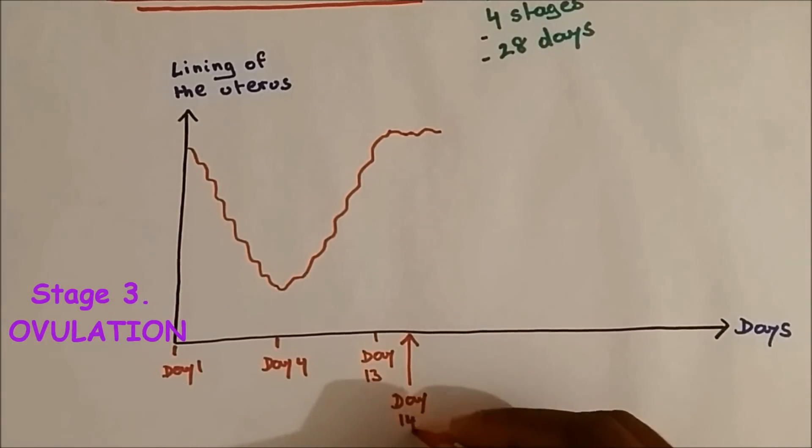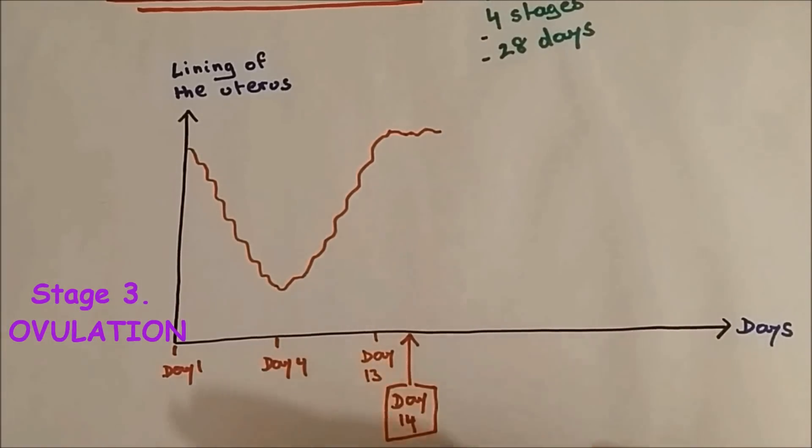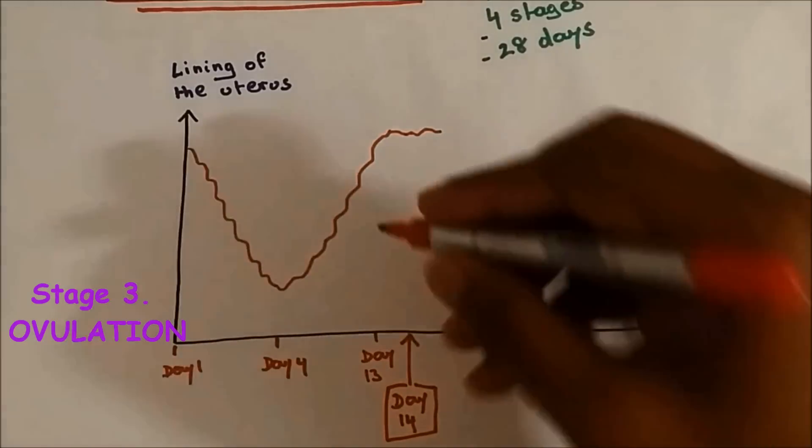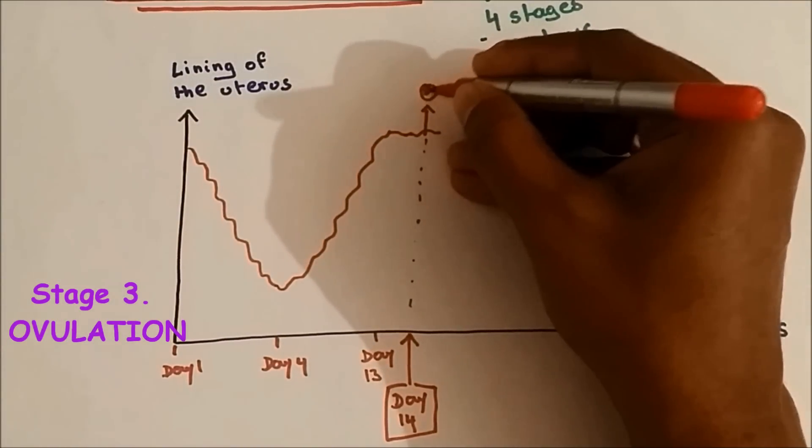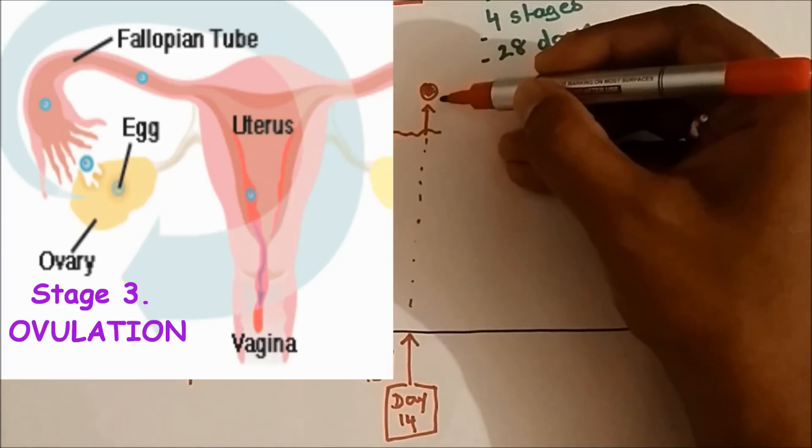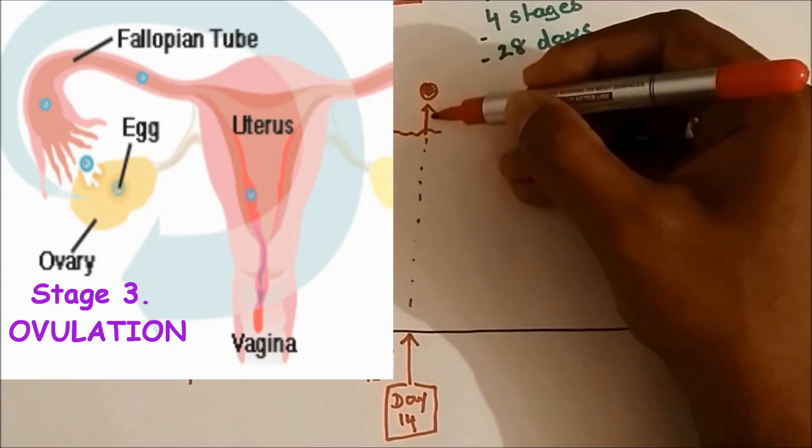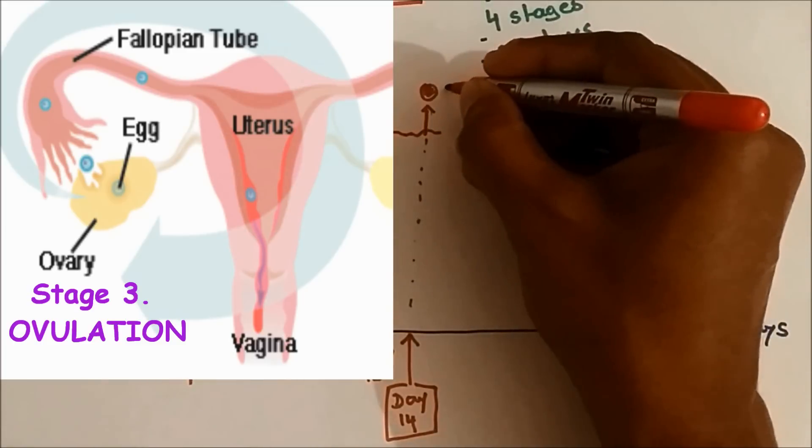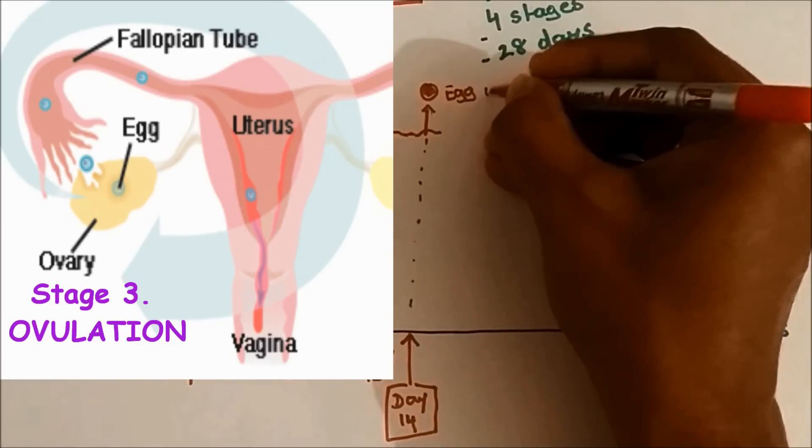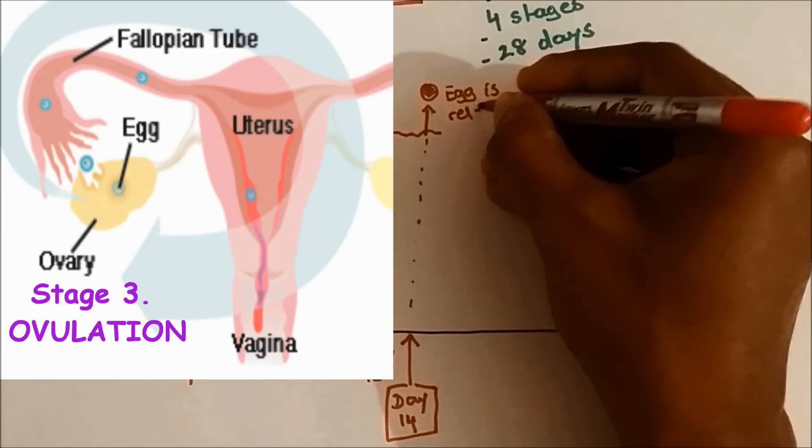And at day 14, which is an important day of the menstrual cycle, it's when the egg is released from the ovary at day 14.